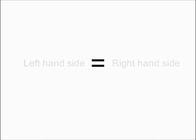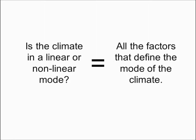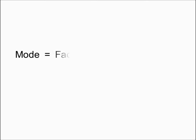So what if we tried to write an equation to find out if the climate was in linear or non-linear mode? On the left, we would ask the question, and on the right, we would have to include all the factors that would be considered by scientists to have some influence on what the actual mode was. It is a certainty that as the factors were determined and assembled, the scientific debate would start to rage: what should be included, how much influence would any factor have, how would some factors interact with others, which would be positive feedbacks, which would be negative, and so on — possibly for eons.